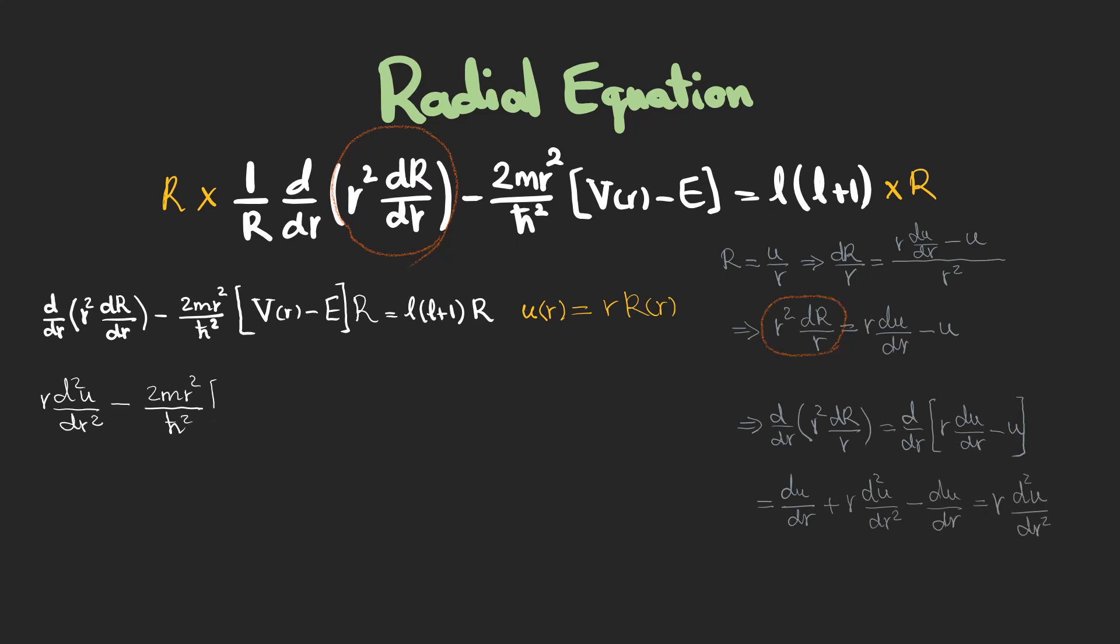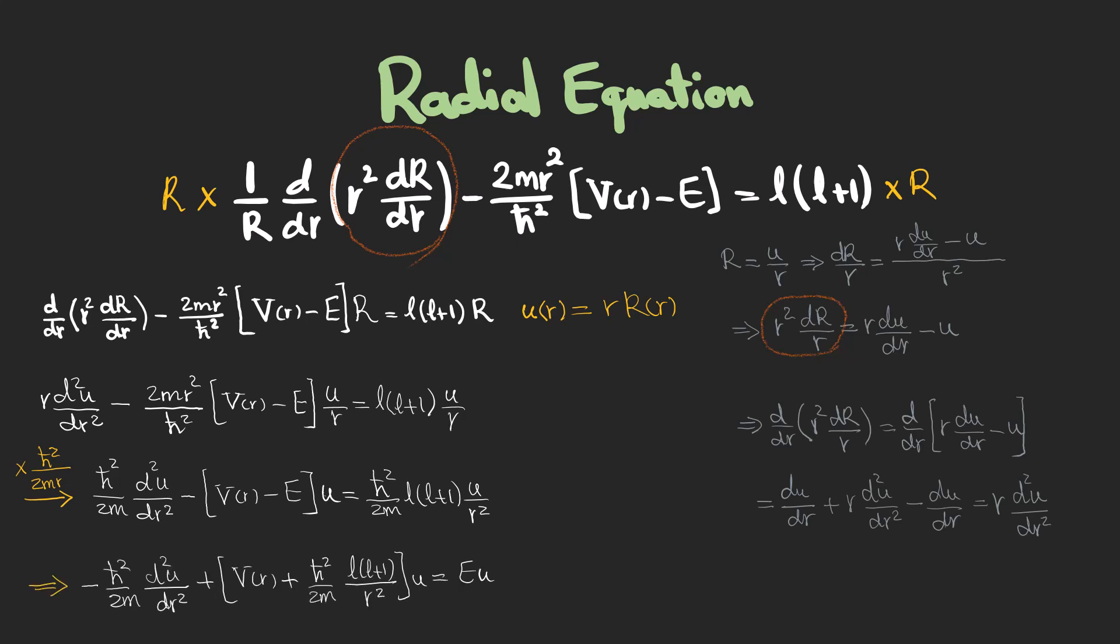Our next step is to rewrite the equation in terms of UR, then multiply both sides by h-bar squared over 2mR, and finally take the energy term to one side to have this equation.